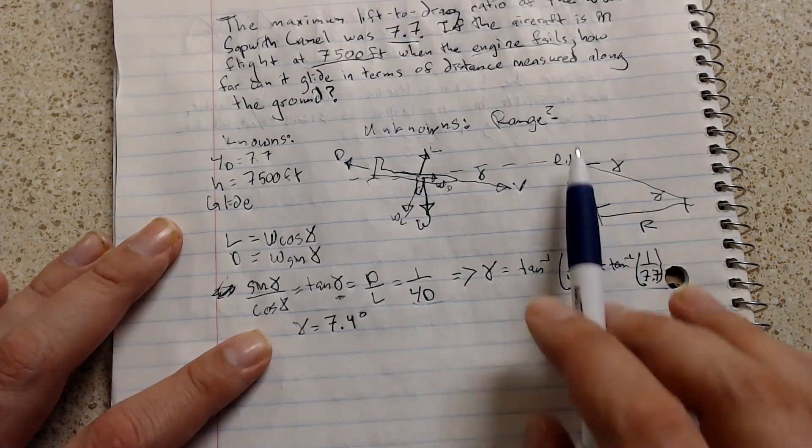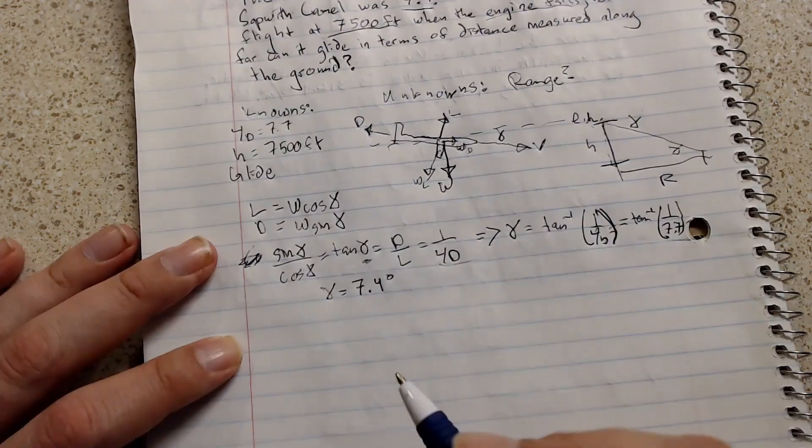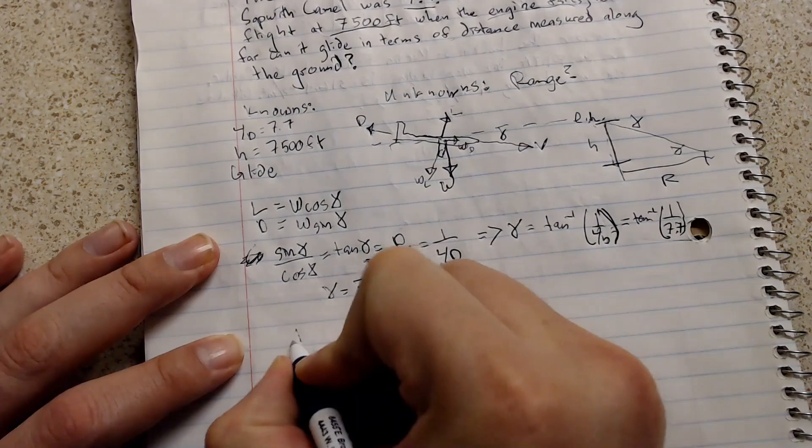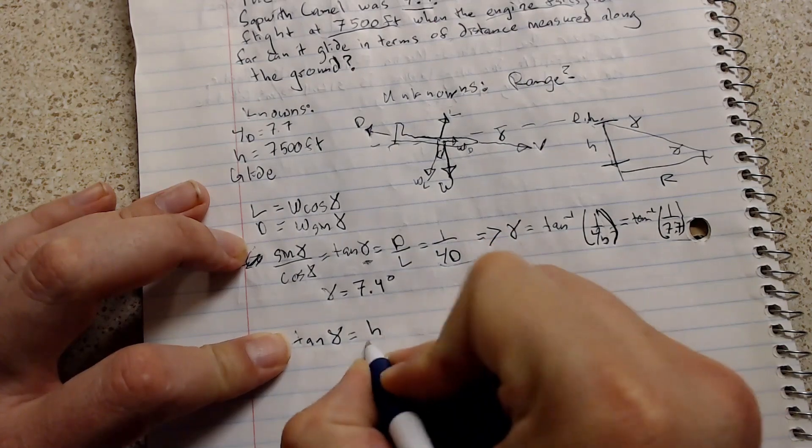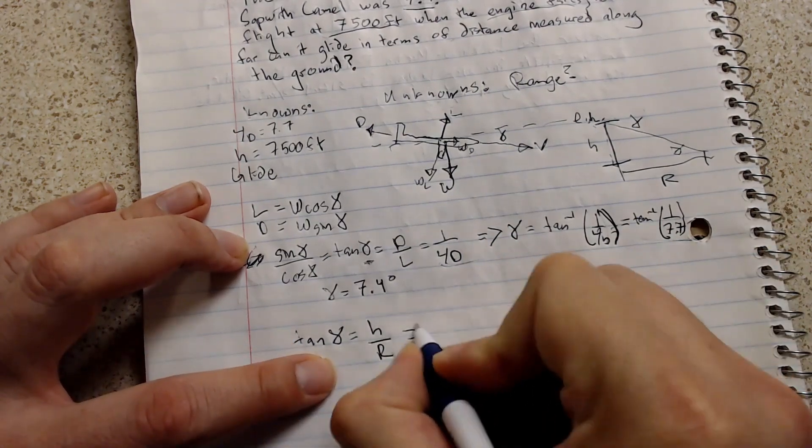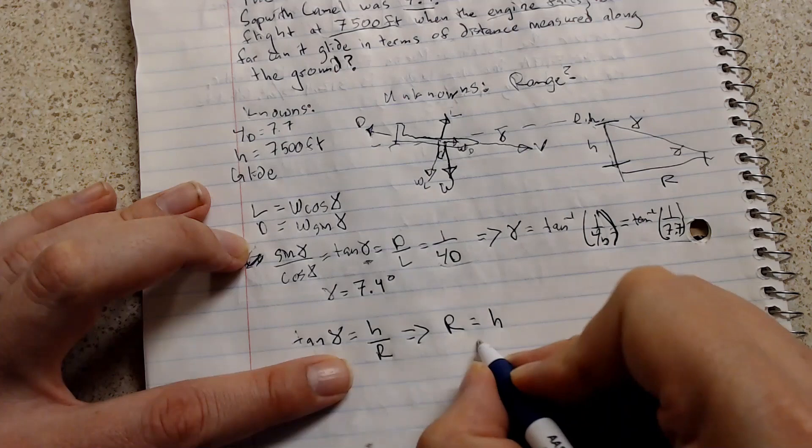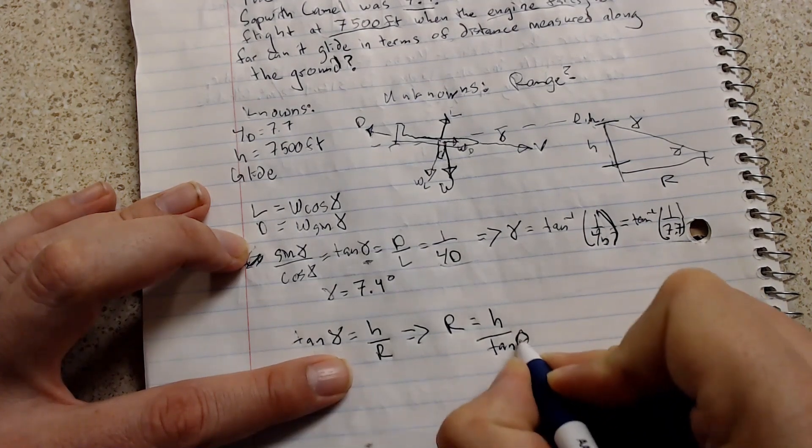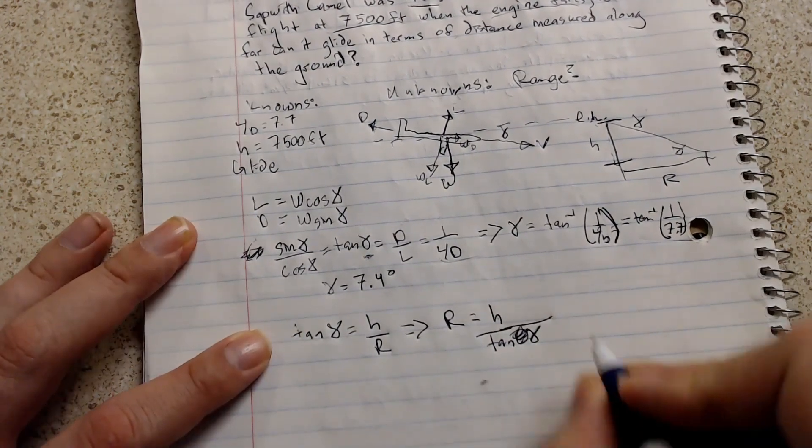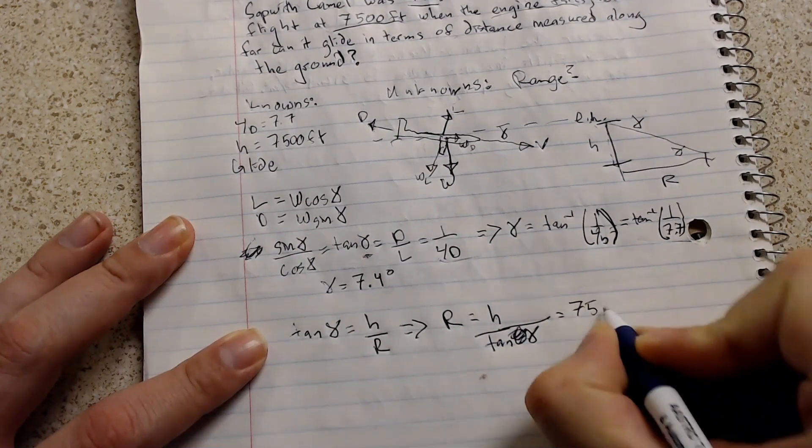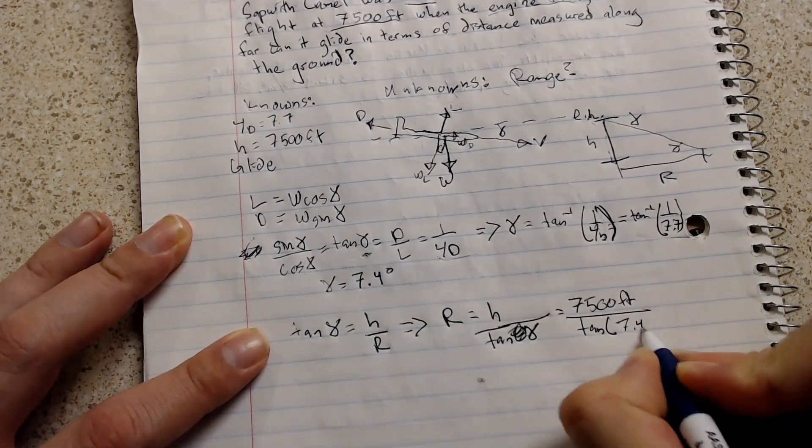Now, looking over here at the triangle that's made between the height, the range, and the flight path of the actual aircraft, and using trigonometry, we know that tangent of the flight path angle is equal to the height over the range. And so what we can do is we can solve that for the range. And range will equal the height divided by tangent of the flight path angle. And if you plug in the values we know, that will give you 7,500 feet over tangent of 7.4 degrees.